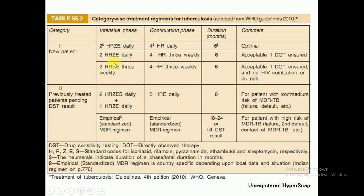An alternative regimen for new patients is 2HRZ daily in the intensive phase, followed by 4HR thrice weekly in the continuation phase — acceptable if directly observed therapy is ensured and there is no HIV co-infection. The total duration is six months.